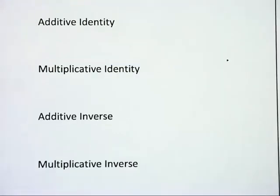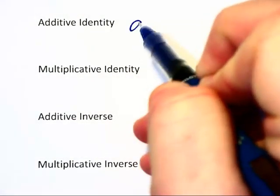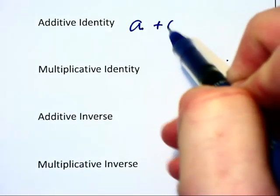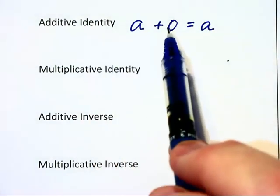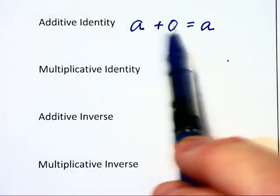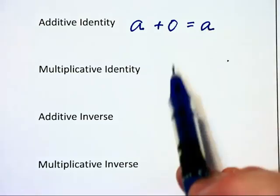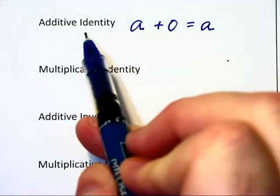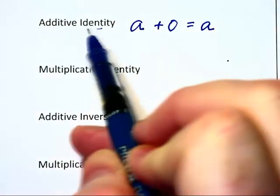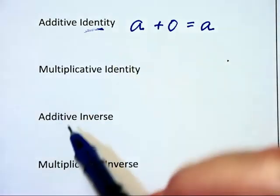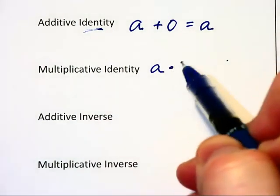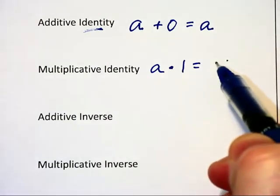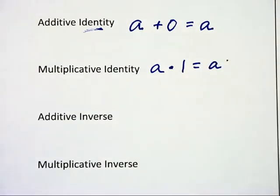The additive identity says a + 0 = a. Your identity is who you are, and if you add 0 to a, you get who you are - the a you started with. I think of the word self with identity: adding to retain one's own value. With multiplication, to get yourself we multiply by one, so one is the multiplicative identity: a · 1 = a.